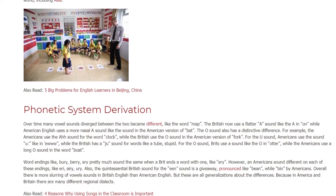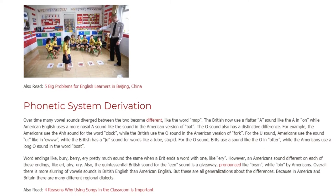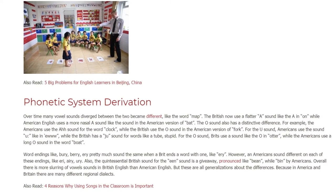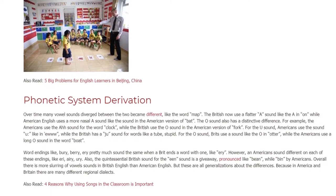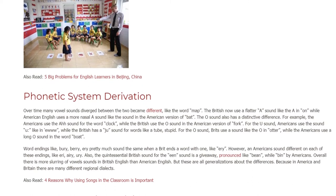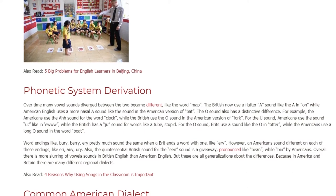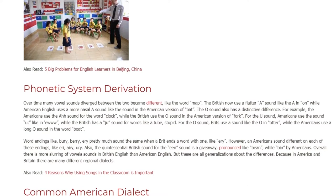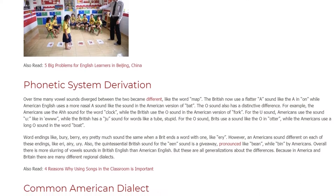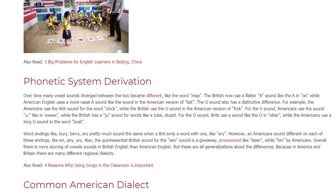For the U sound, Americans use the sound as in 'dune,' while the British have a distinct sound for words like 'tube.' For the O sound, Brits use a sound like the O in 'otter,' while Americans use a long O sound as in the word 'boat.'